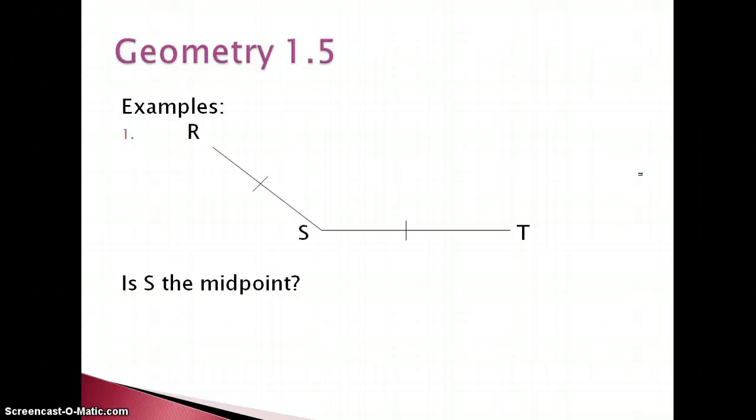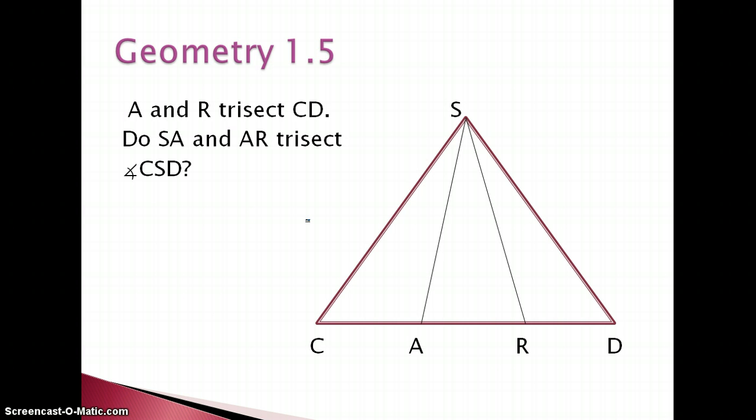So an example: RST. That looks like we've got an angle here. Is S the midpoint? We can only have midpoints with segments. This is not a segment; we have two separate segments. So is S a midpoint? No. Had RS been moved here, we could say it is, but because of the way it's located, we can't say that.